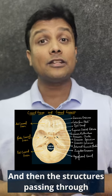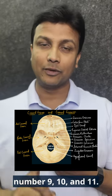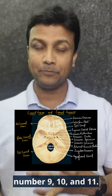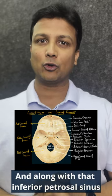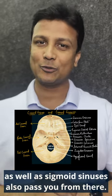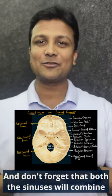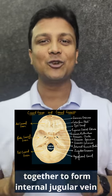And then the structures passing through jugular foramen will be cranial nerves 9, 10, and 11. Along with that, inferior petrosal sinus as well as sigmoid sinuses also pass through there. Don't forget that both the sinuses will combine together to form internal jugular vein.